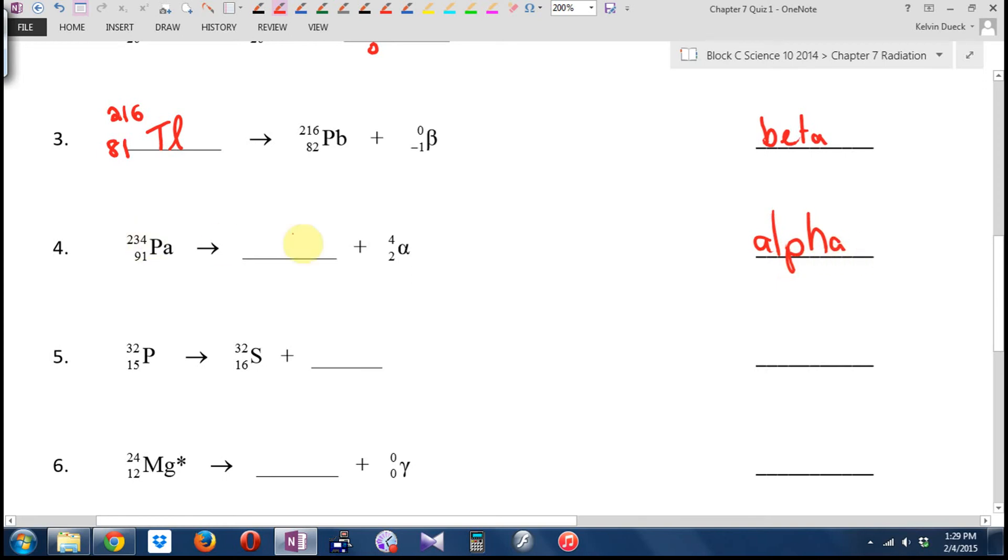Okay, 234. I got four here. This has to be a mass of 230. And it looks like I have 89 protons left because two of them went with the alpha particle and element number 89 is? Actinium. Oh, AC again? Yeah.